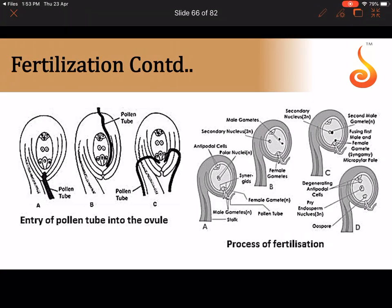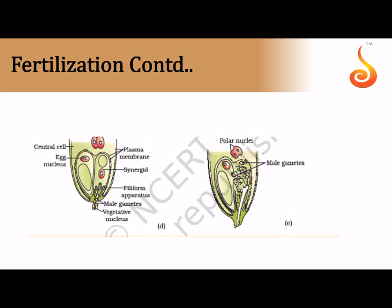In fertilization, the pollen tube may enter the embryo sac through the micropyle, chalaza, or integument — but ultimately it reaches the micropylar end. The pollen tube enters one synergid and ruptures, releasing two male gametes. One male gamete fuses with the egg and the other fuses with the diploid primary endosperm nucleus — forming the zygote and a triploid endosperm respectively. This is called double fertilization: one fusion is amphimixis and the other is endosperm formation.